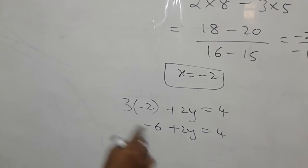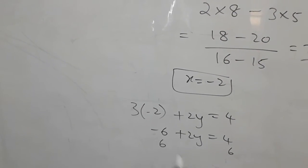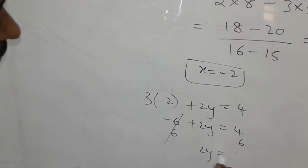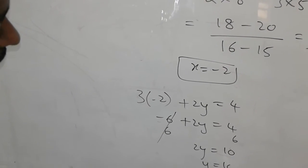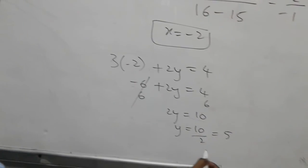To find y, cancel out 6, so take the opposite sign. This will cancel, we are left with 2y equals 10. Y is nothing but 10 over 2, and the y value is 5.